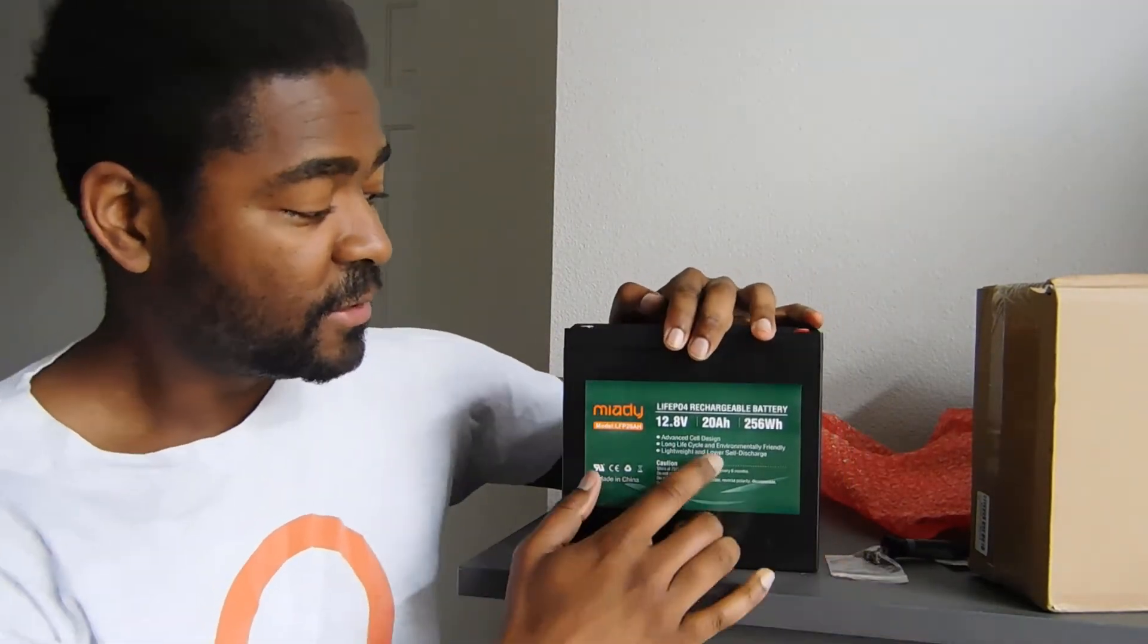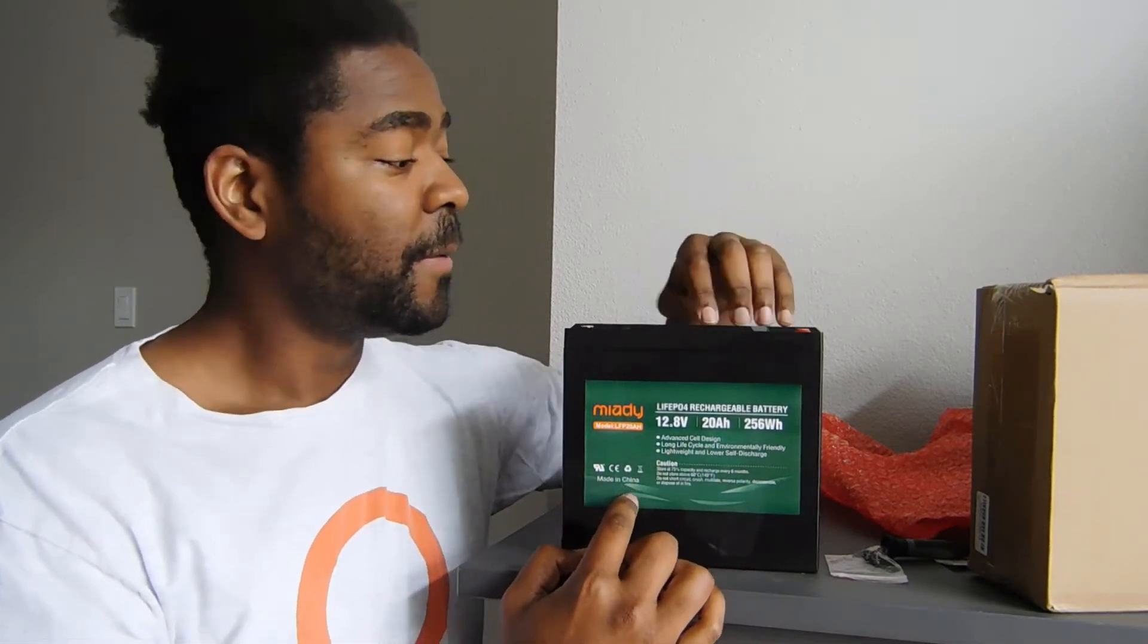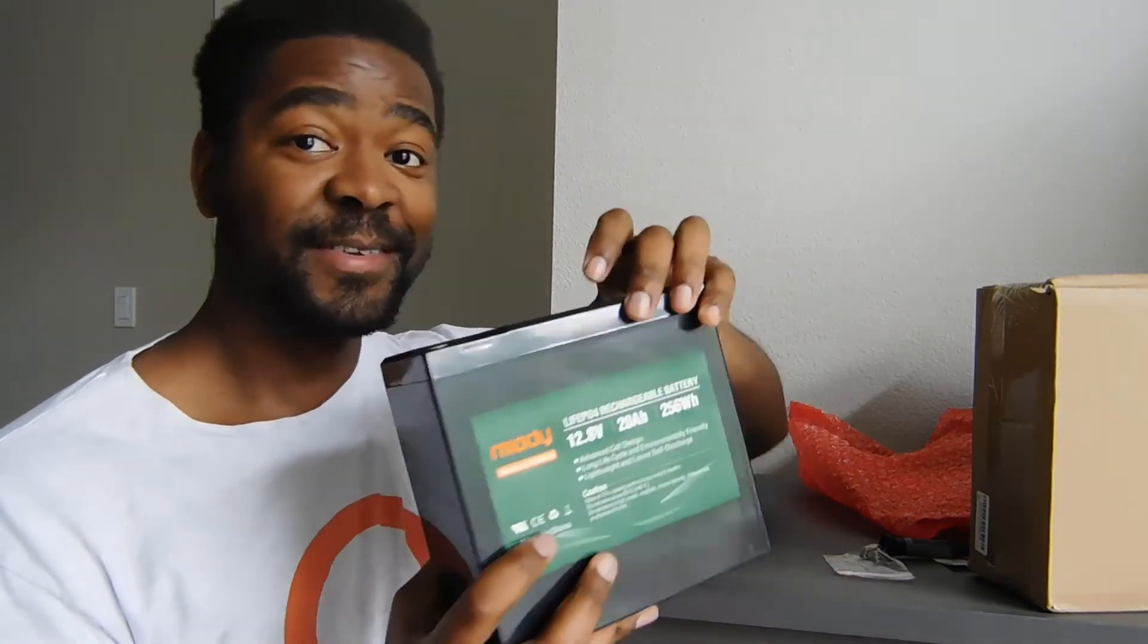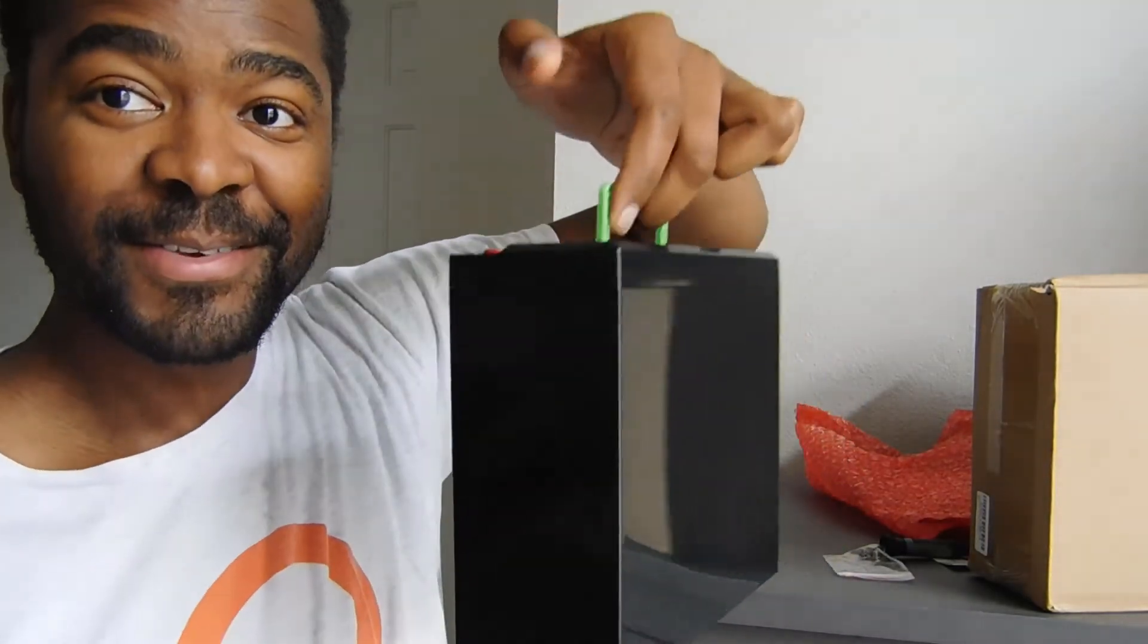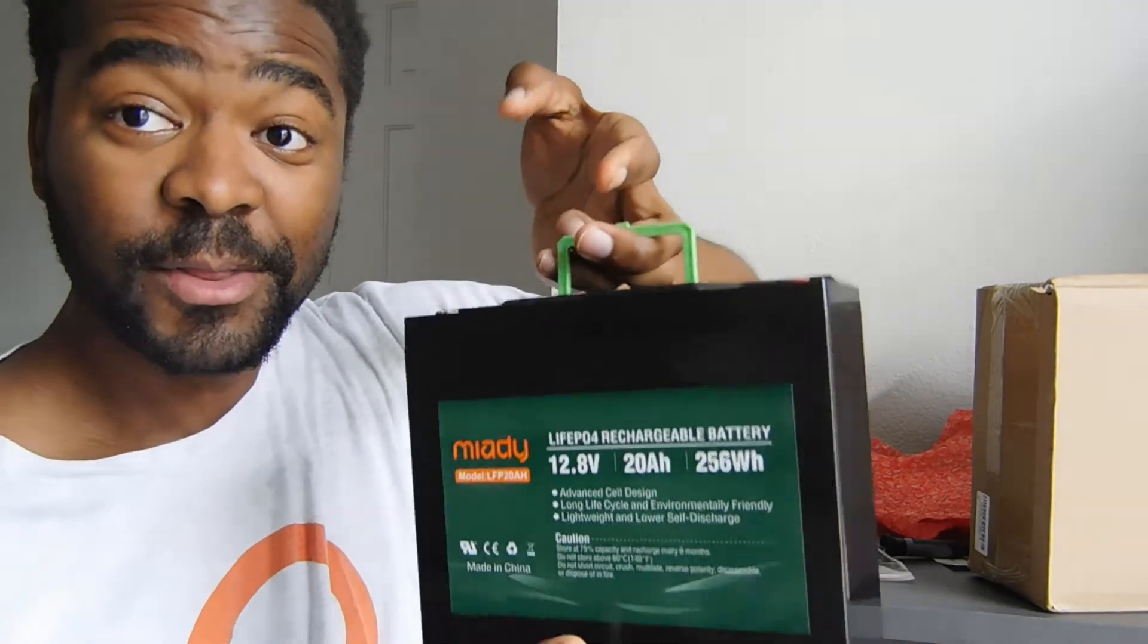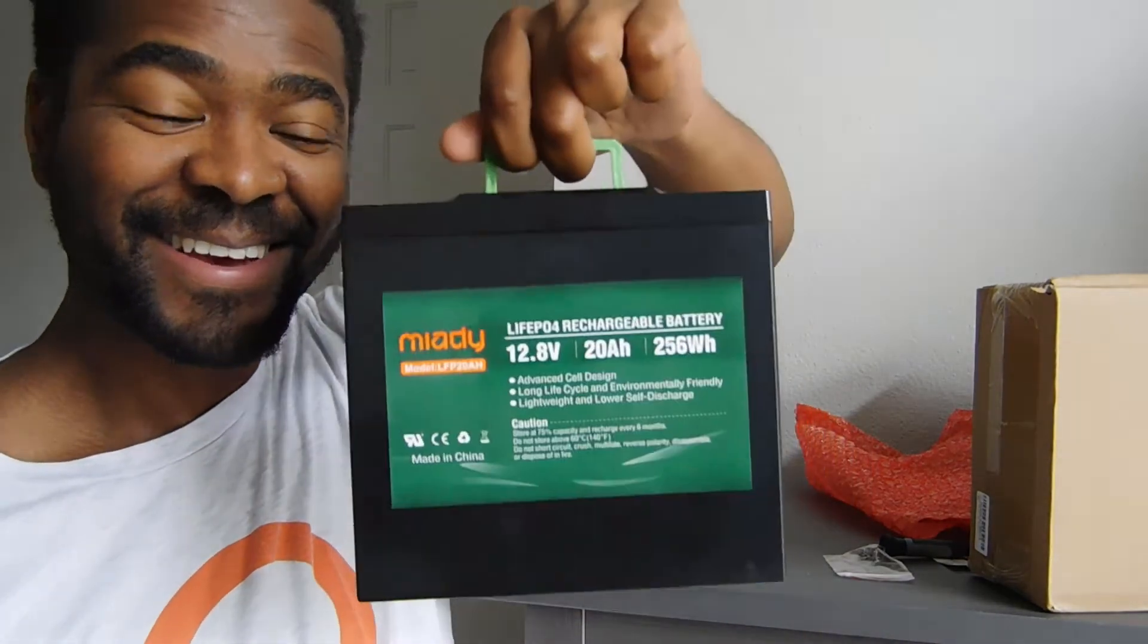So again, this is the 20 amp hour lithium ion phosphate 12 volt Miotti battery. Now look at this. This is actually kind of cool. It's got a little handle on the top. It's still a lightweight battery, but I can just hold it with this little handle. It's kind of cute.